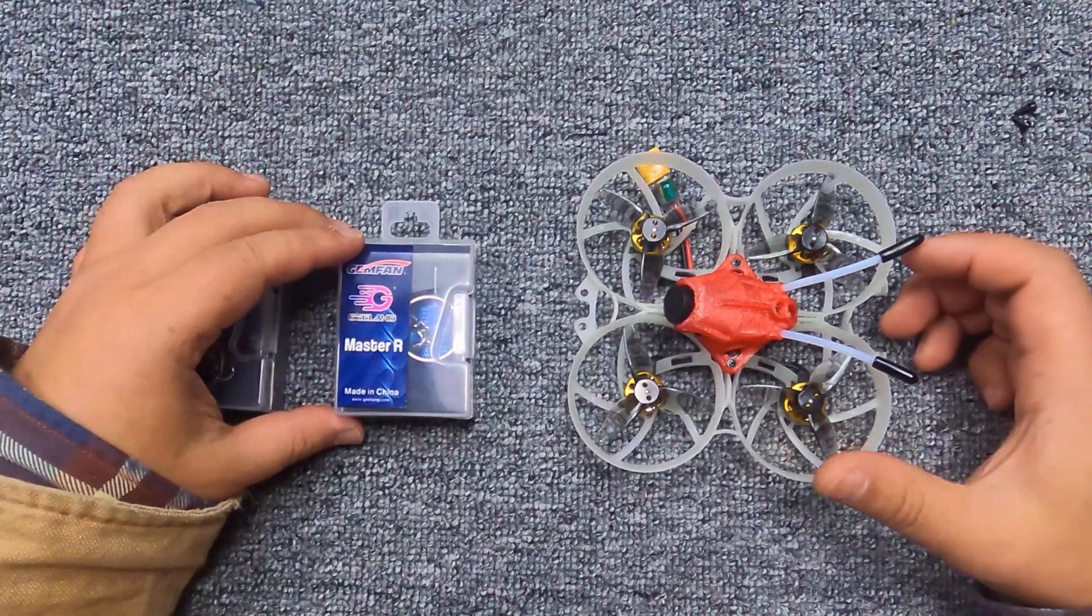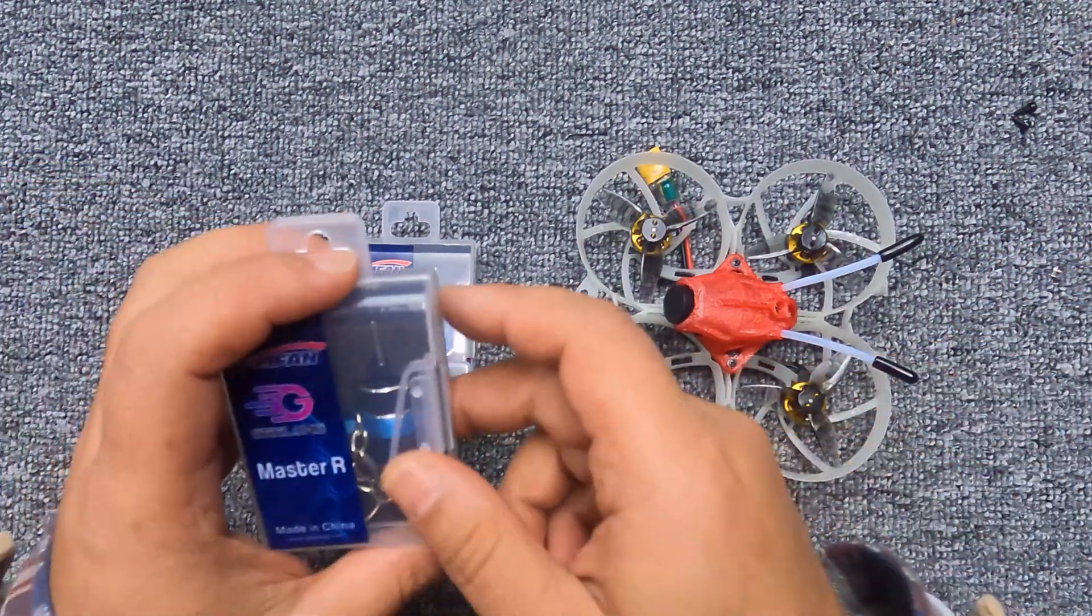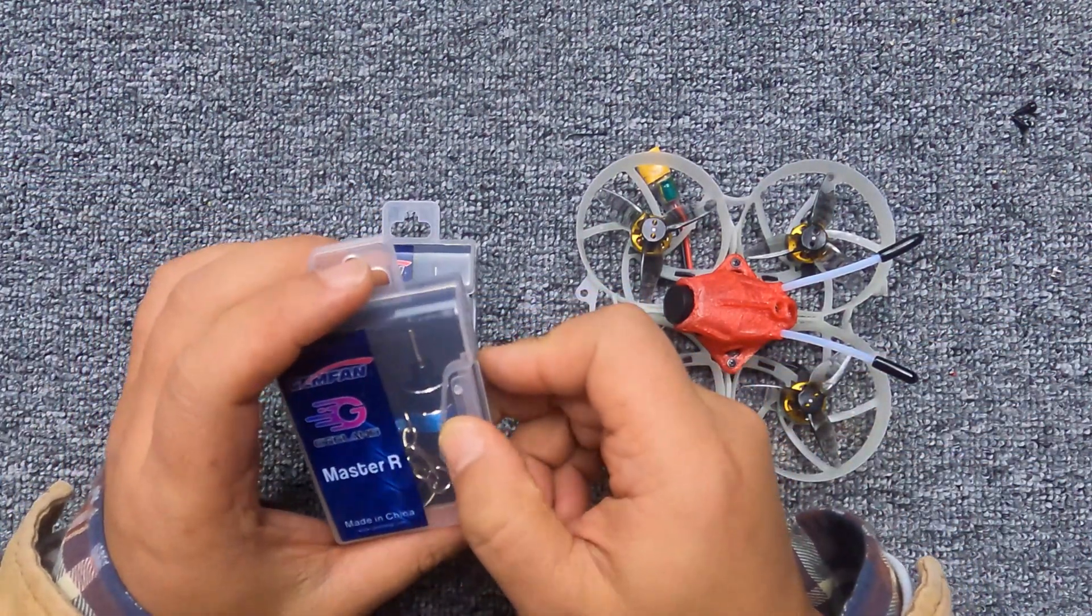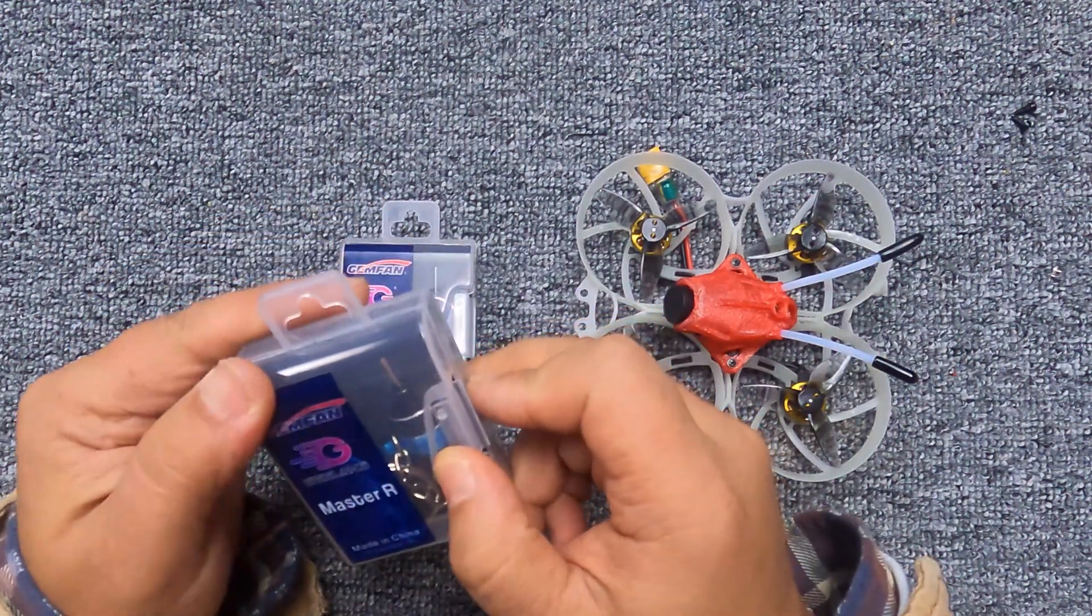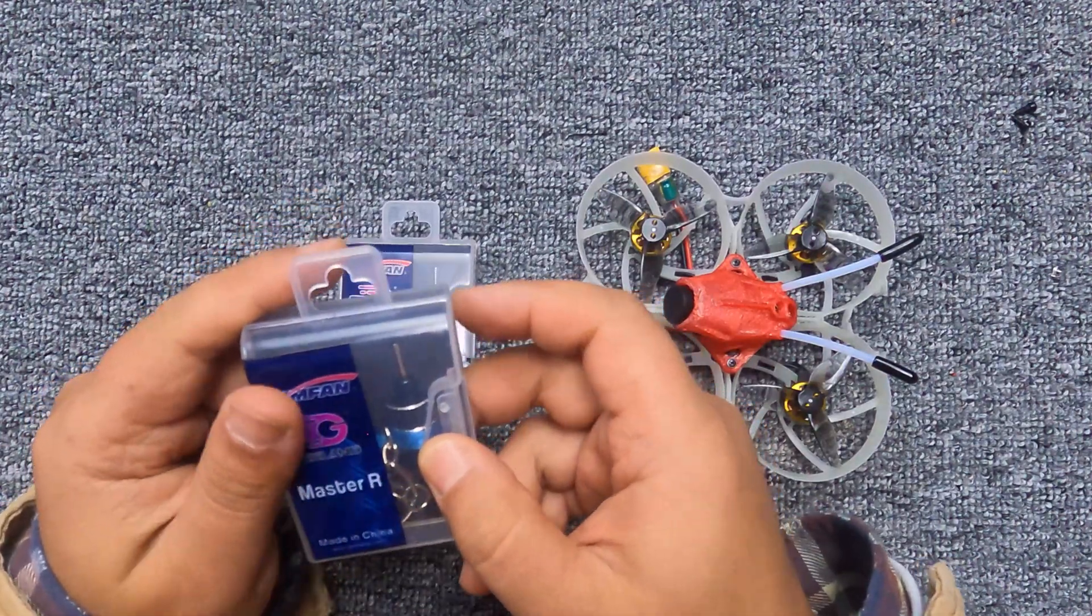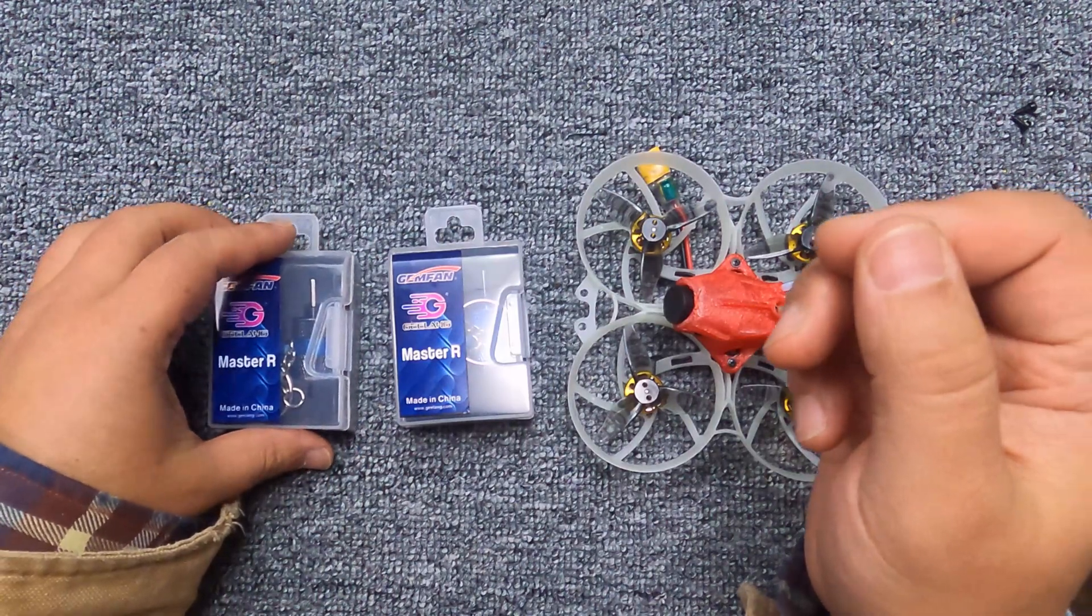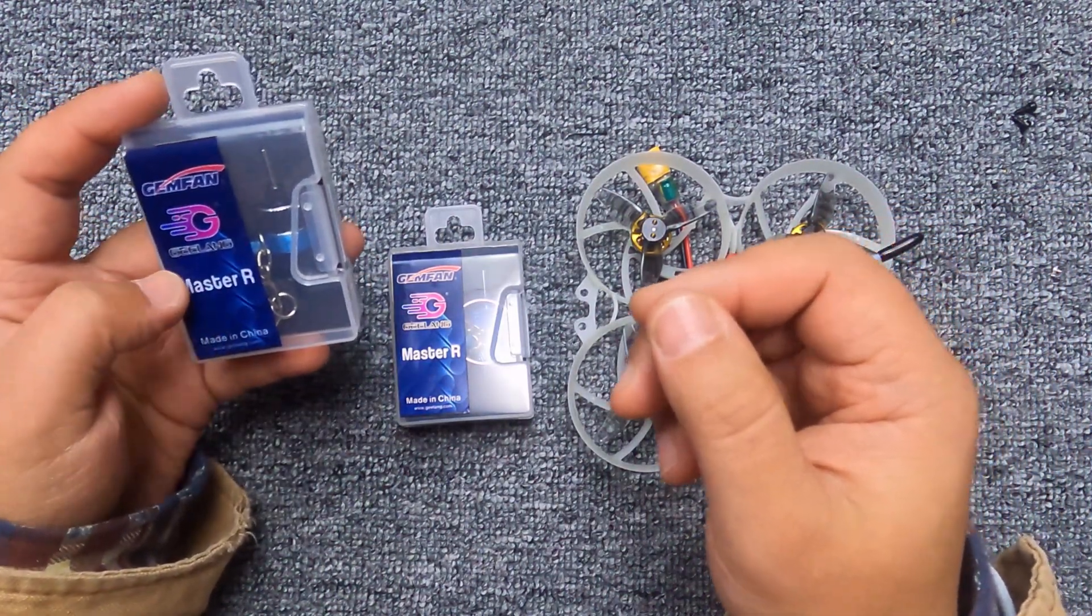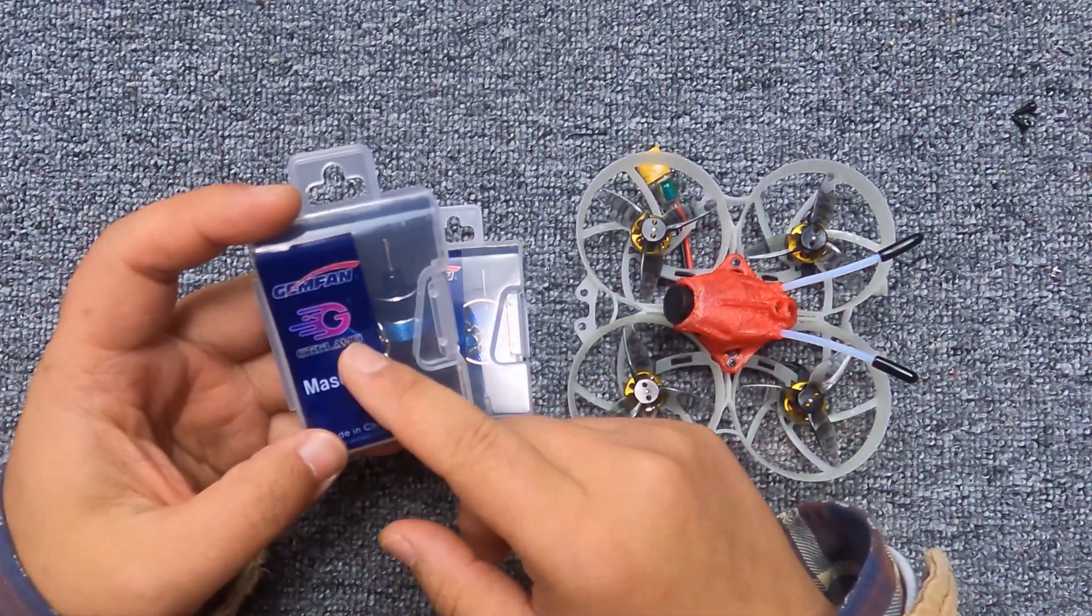Hello guys, today let me introduce a very tiny, very useful tool for FPV drones, especially for micro FPV drones. This tool is called the Master R propeller remover, made by Jilong FPV.